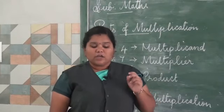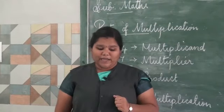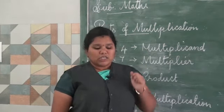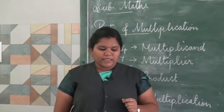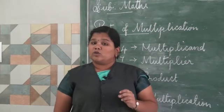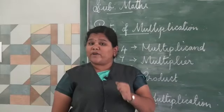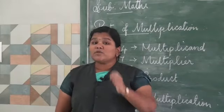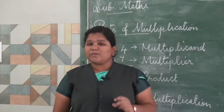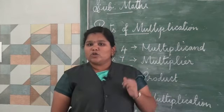The father asked Renu: 'Renu, tell me how many mangoes are there in all five baskets?' Renu thought for a while and quickly replied, 'Appa, there are 615 mangoes in all.' You may be wondering how Renu replied so fast — she used quick multiplication to solve the problem.